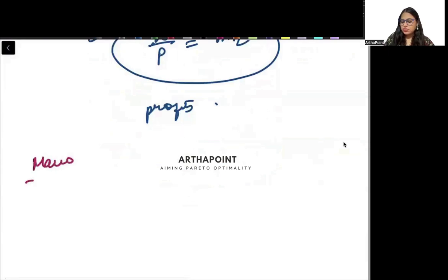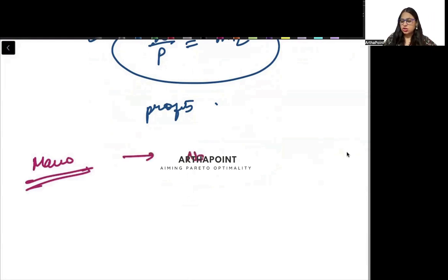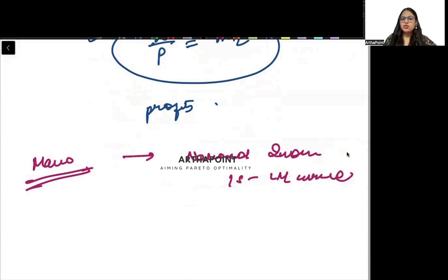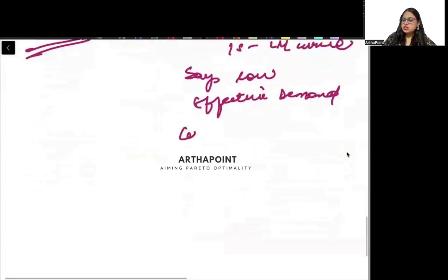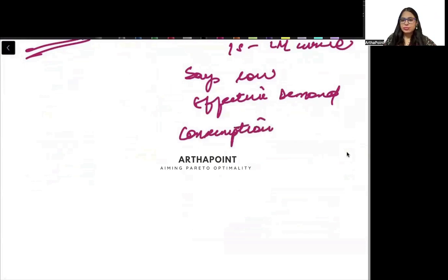Now let's talk about Macroeconomics. In macroeconomics, you will begin with national income accounting. Then you will do IS and LM curve. Then you will go ahead and do Say's Law, the principle of effective demand, and the law of effective demand. After that, you will do all consumption theories — permanent income hypothesis, life cycle hypothesis, and Fisher's intertemporal hypothesis.